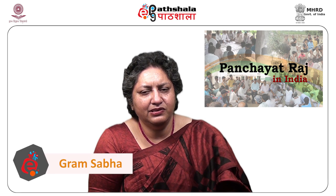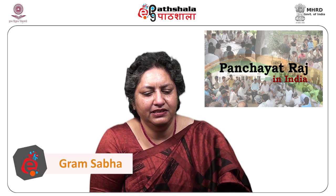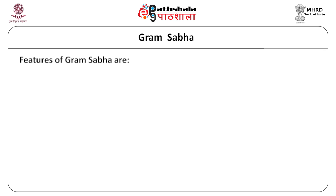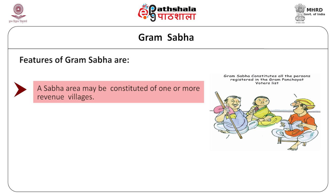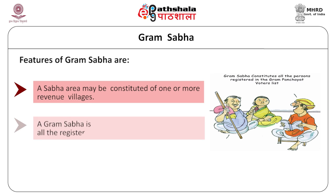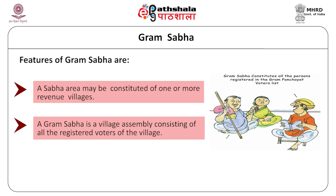Gram Sabha is also known as the village level parliament. It is constituted for a single village or a group of villages, and it is the village level assembly constituting all the registered voters of that particular area. If the area is one village, then the registered voters of that village; if more than one village, then the registered voters of all the villages included in the Sabha area.